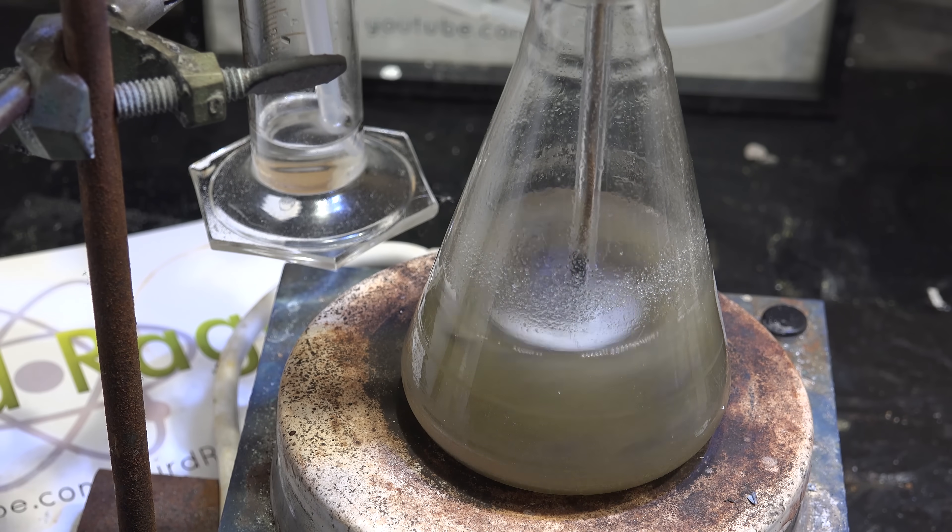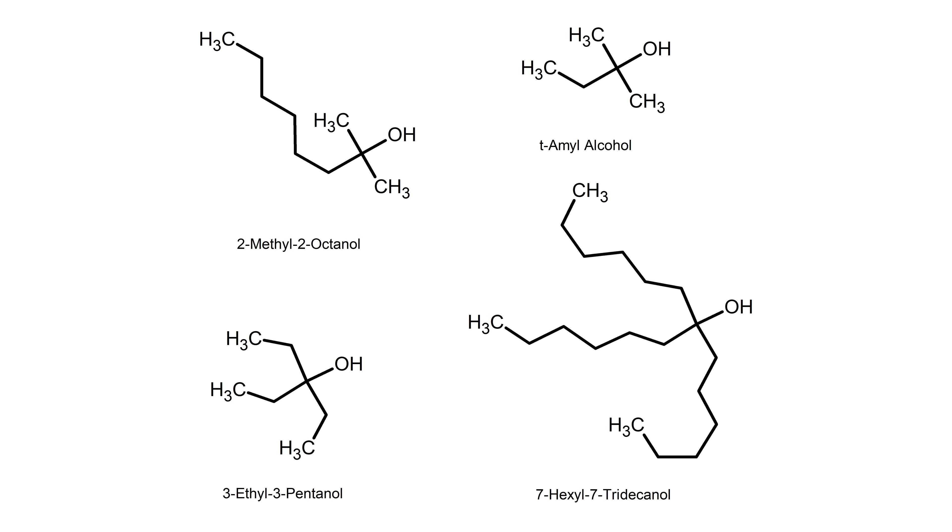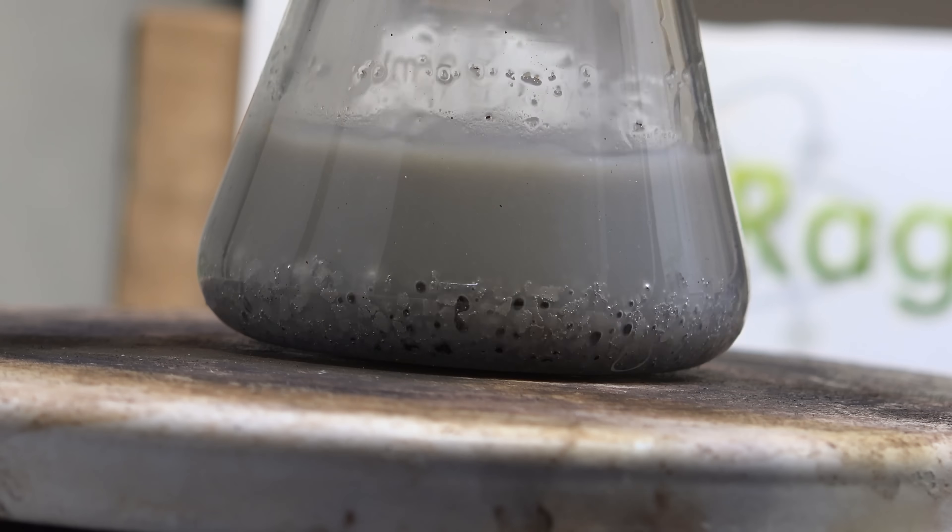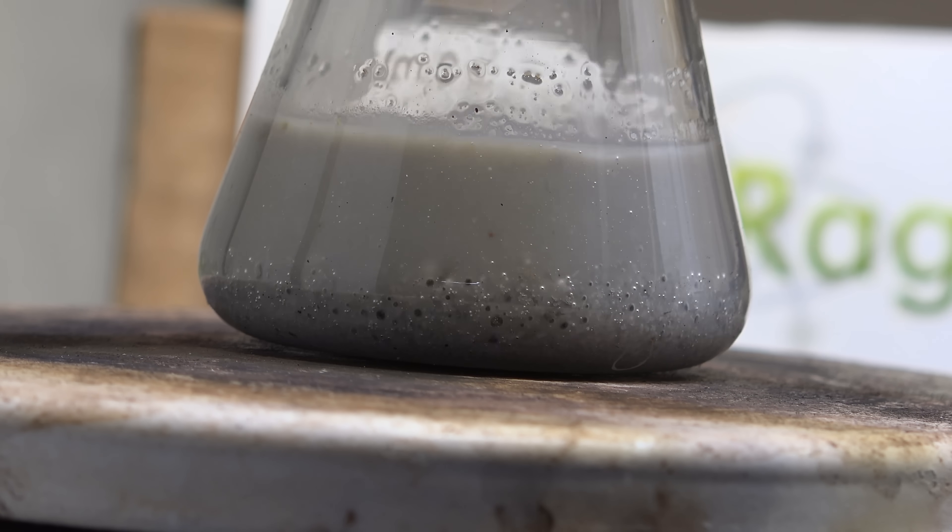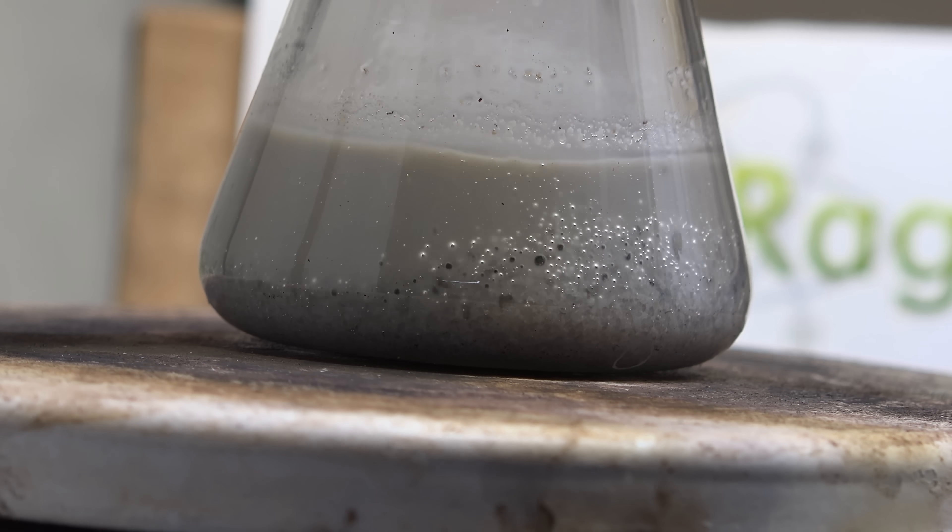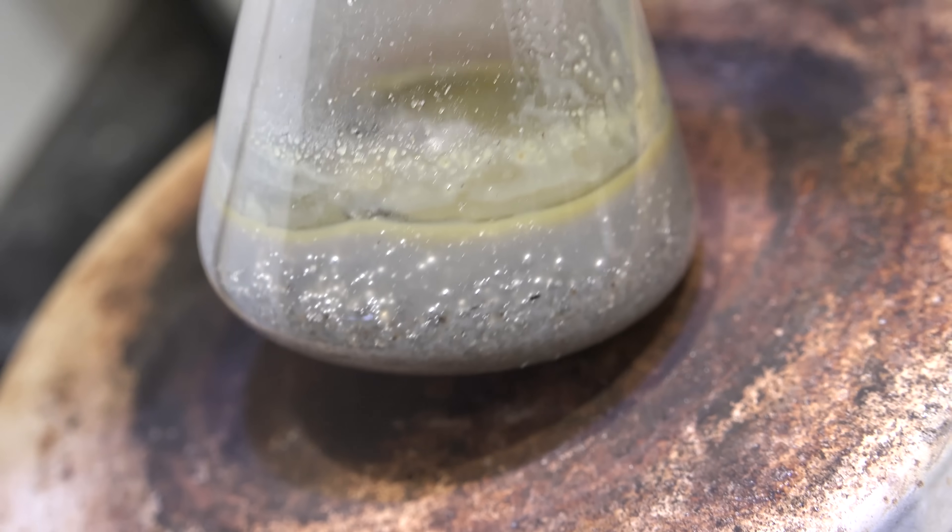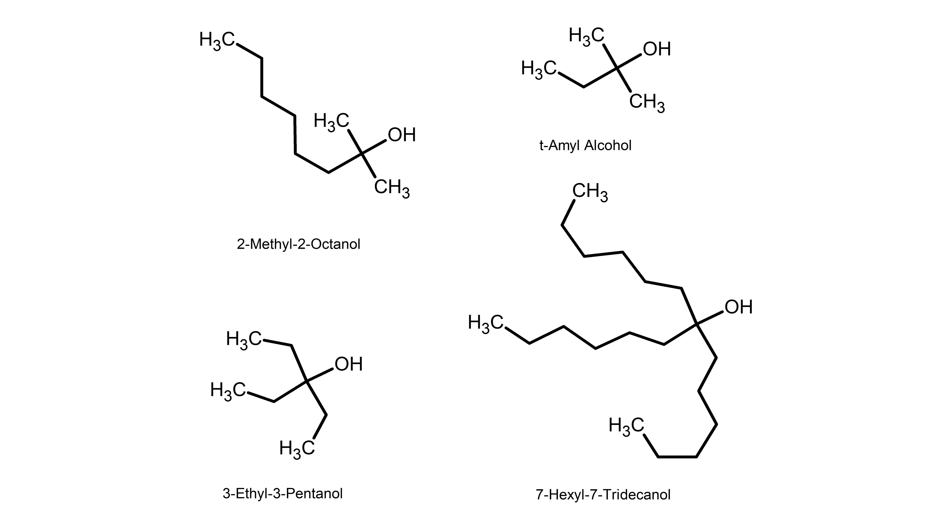So far I've been using 3-ethyl-3-pentanol that I made myself by the Grignard reaction as seen in a previous video. I also made a bunch of other alcohols in case it didn't work. I used 7-hexyl-7-tridecanol in a special theory testing experiment to prove that the whole sodium production process was viable and worth opening a full project on. While these alcohols are exceptionally good and can be made by the amateur, it's a lot of work and that makes them somewhat expensive in terms of time and effort.